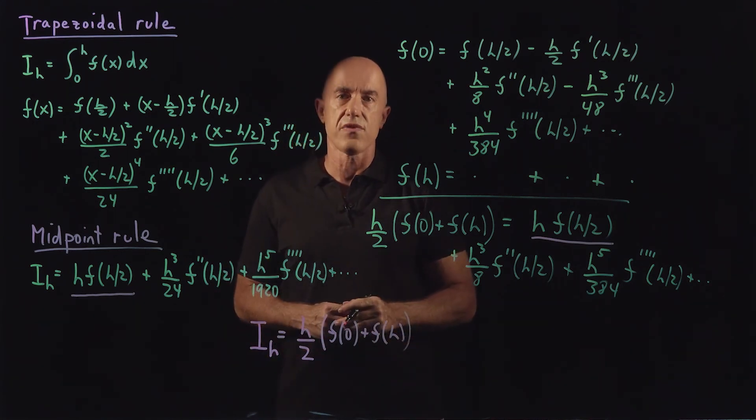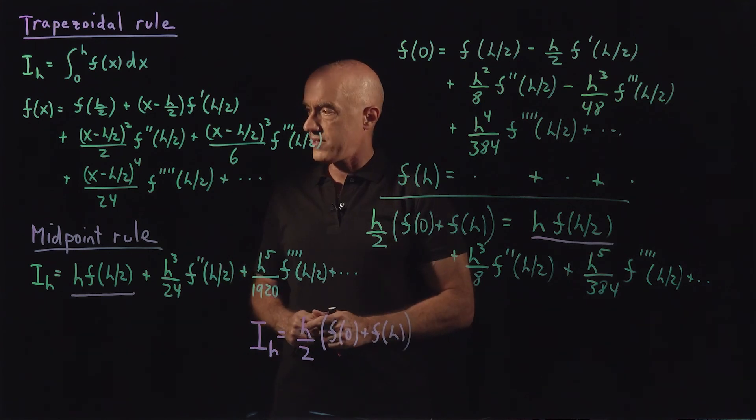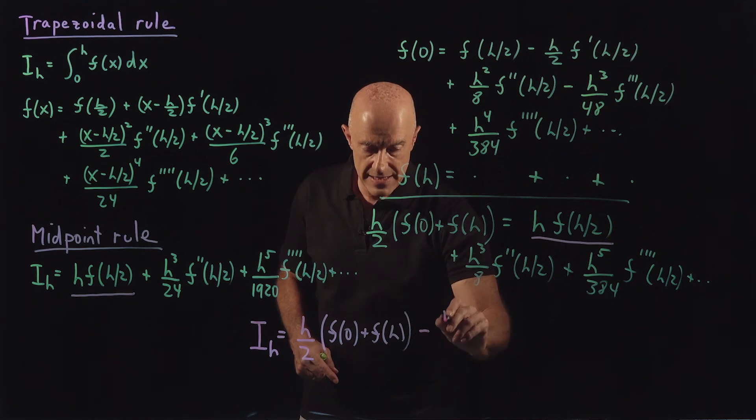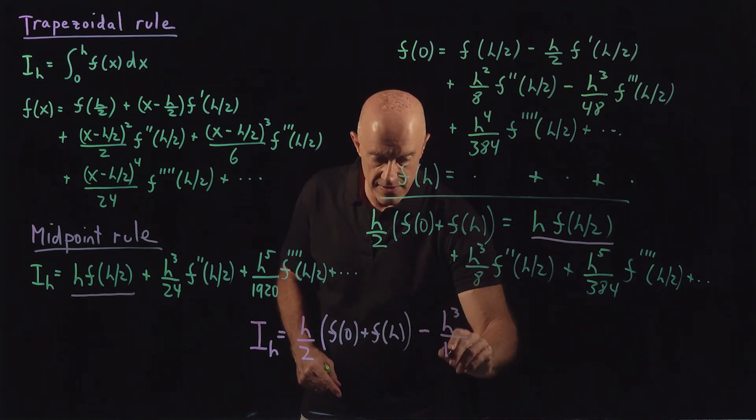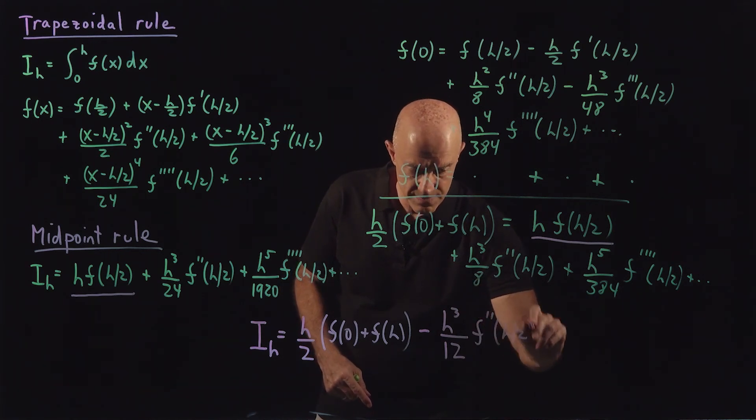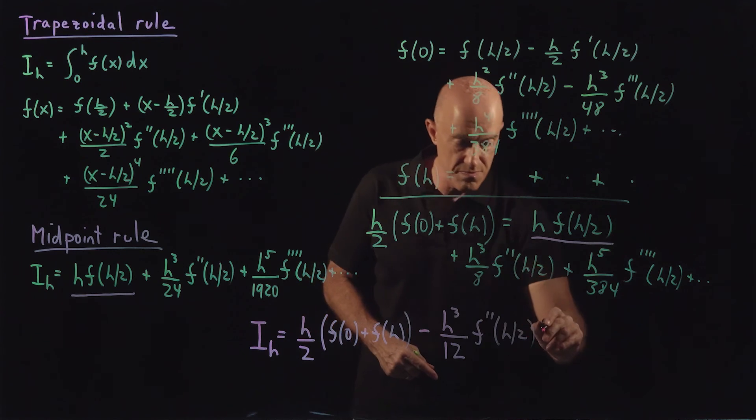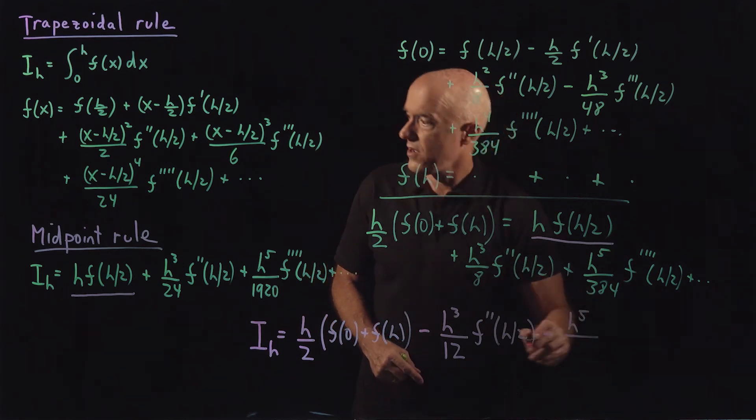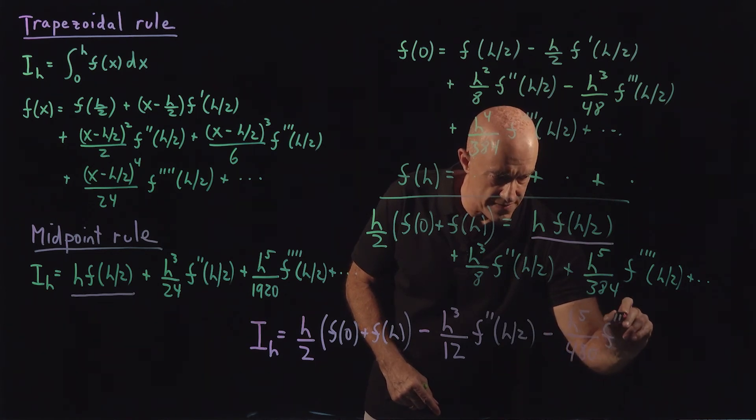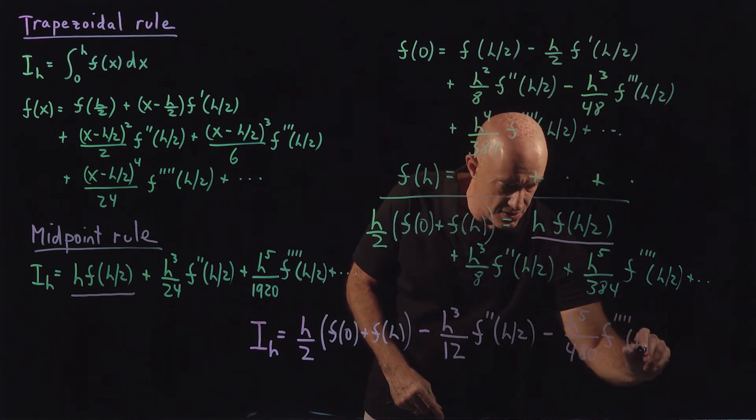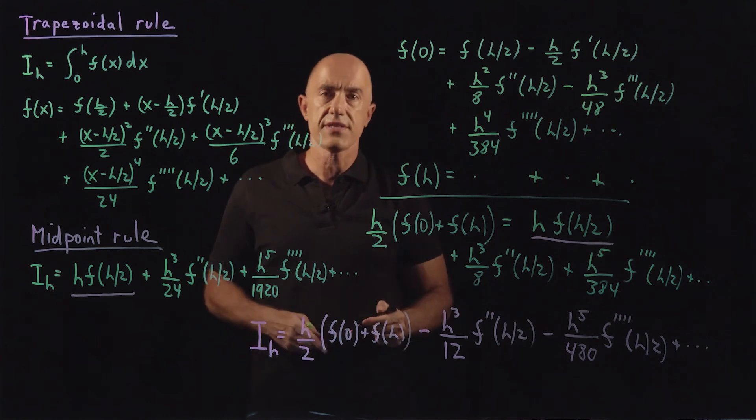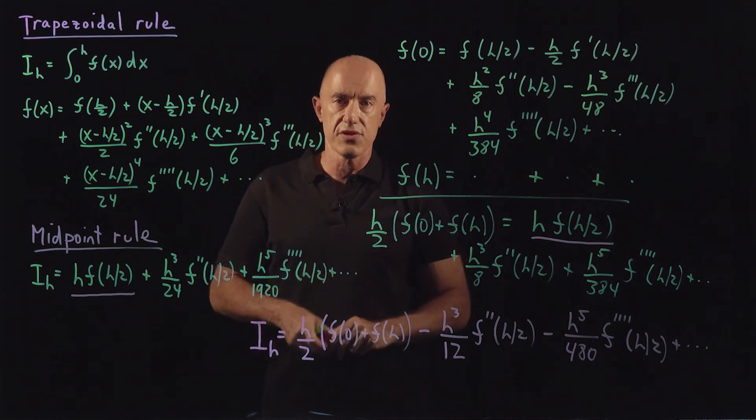And then you add all the error terms. You get a minus h cubed over 12 f double prime of h over 2. And the last term will be minus h to the fifth over 480, the fourth derivative of f at h over 2. And those are all the terms that I'll need to keep. So this is our elementary integration formula.